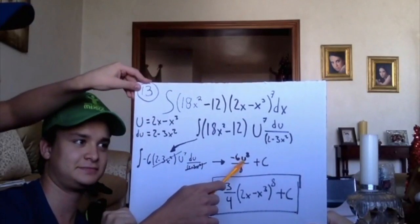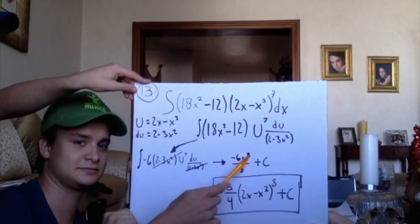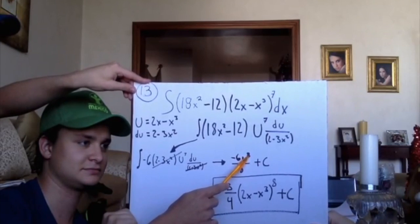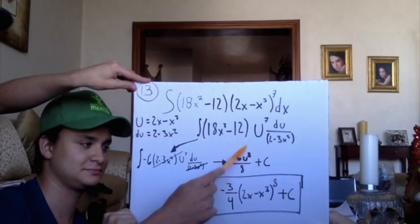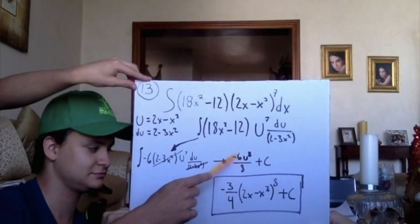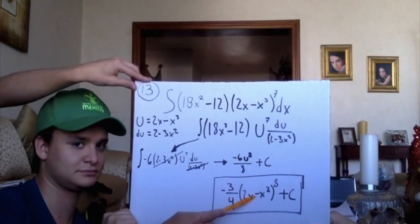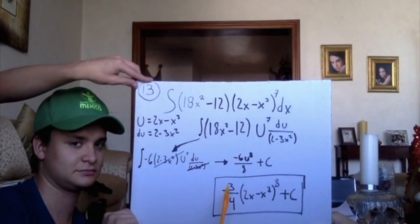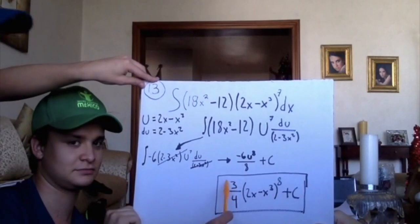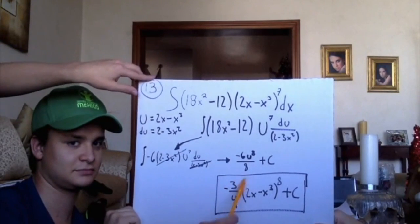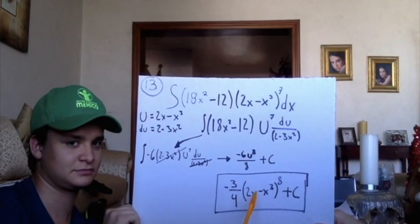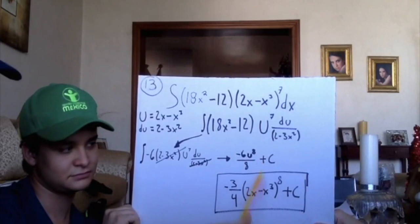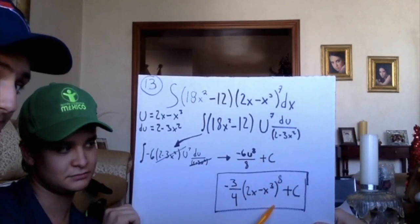And after that, we just add one value to the exponent. And just like the exponent, we add it to the denominator. Finally, we substitute back u. And as you can see, we simplified. Therefore, our answer is negative 3 fourths, parenthesis 2x negative x cubed to the power of 8 plus c. Thank you.